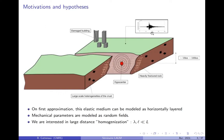We want to understand the wave at the surface not based on precise knowledge of all the mechanical parameters at every point along the trajectory, because that information we're never going to get. Instead, we model this medium as random — we don't know the values at each point, but we model it with statistical parameters. We assume we can identify statistical parameters like correlation length, average value of the mechanical parameters, variance or standard deviation of the fluctuations, etc.